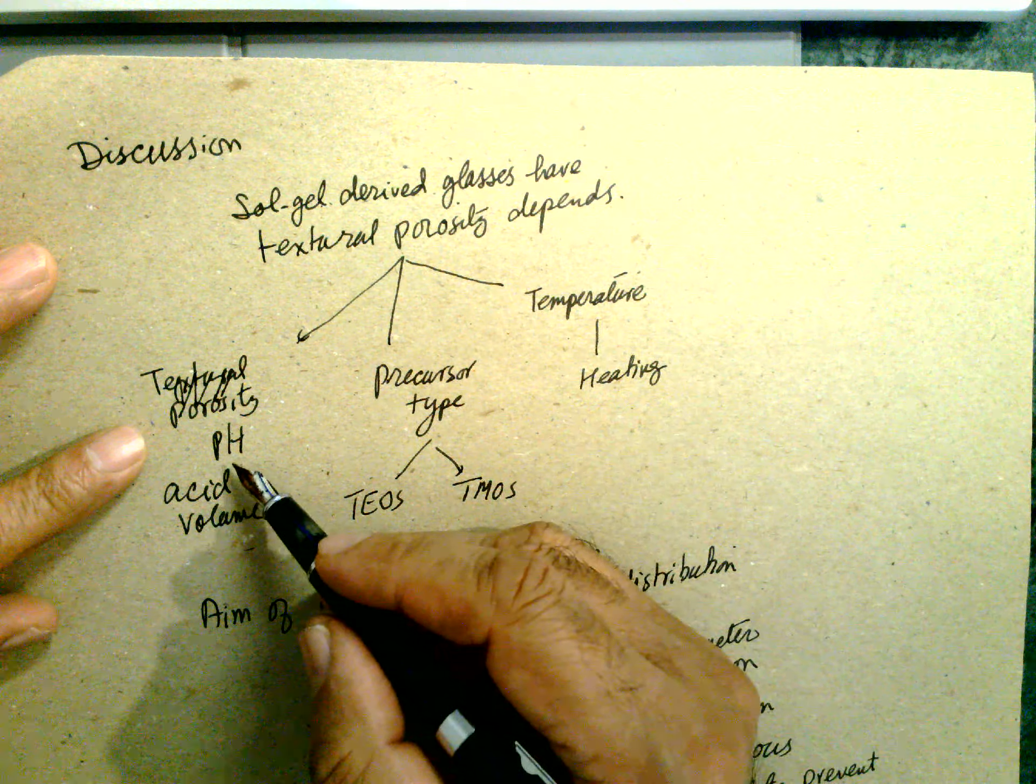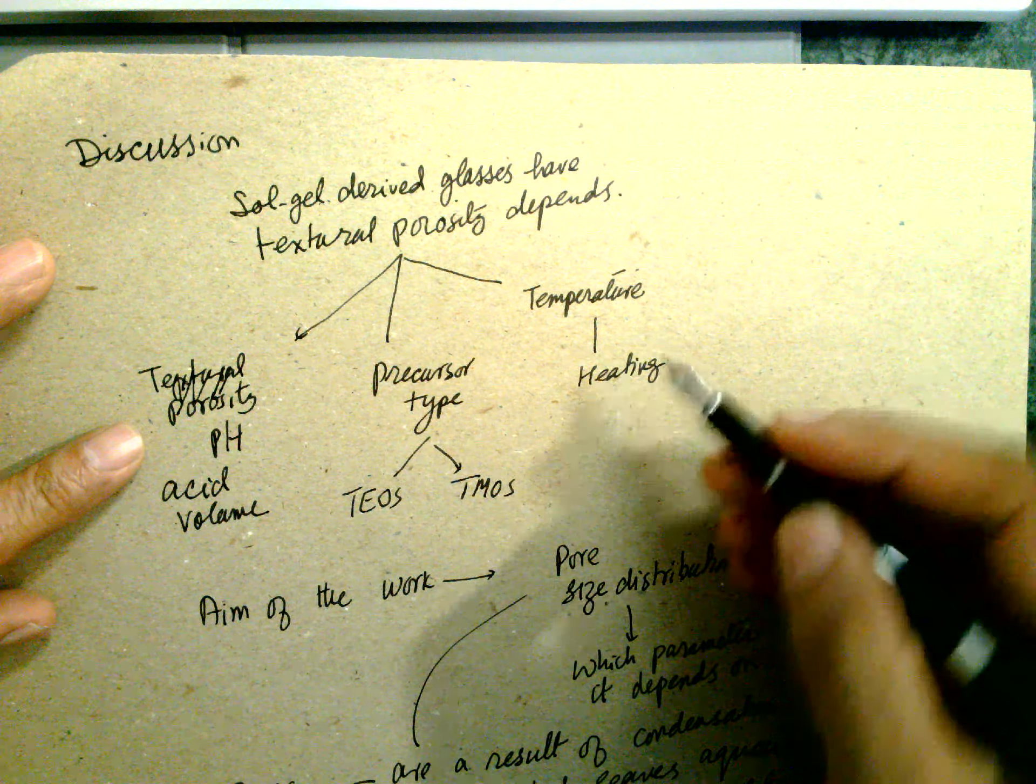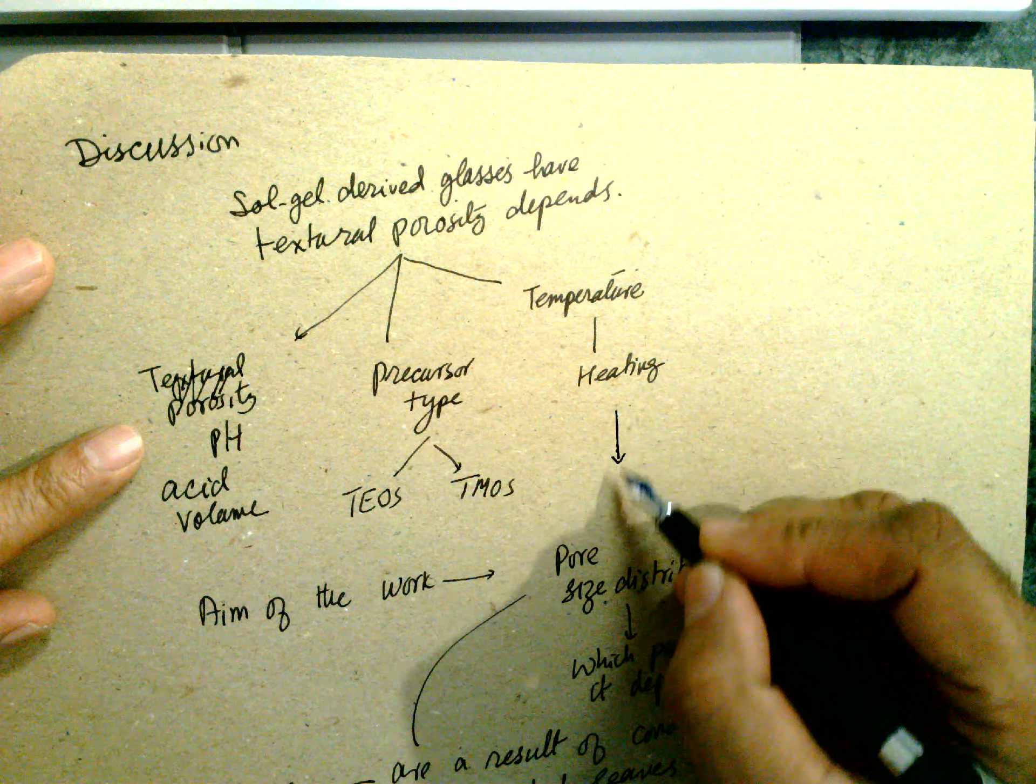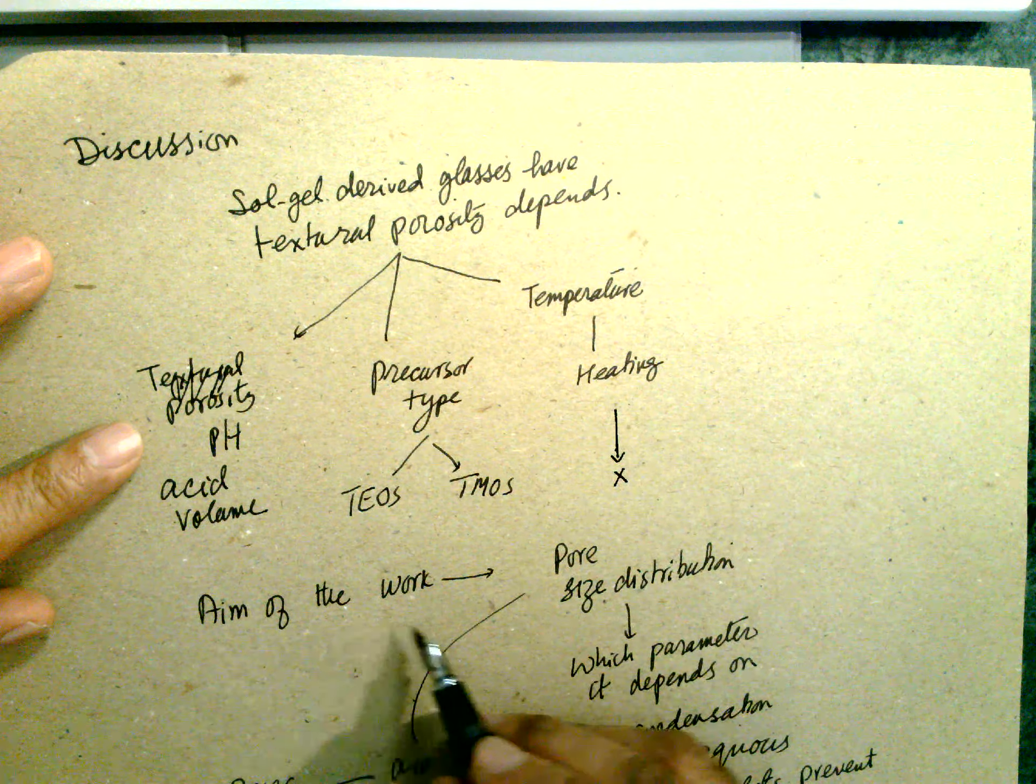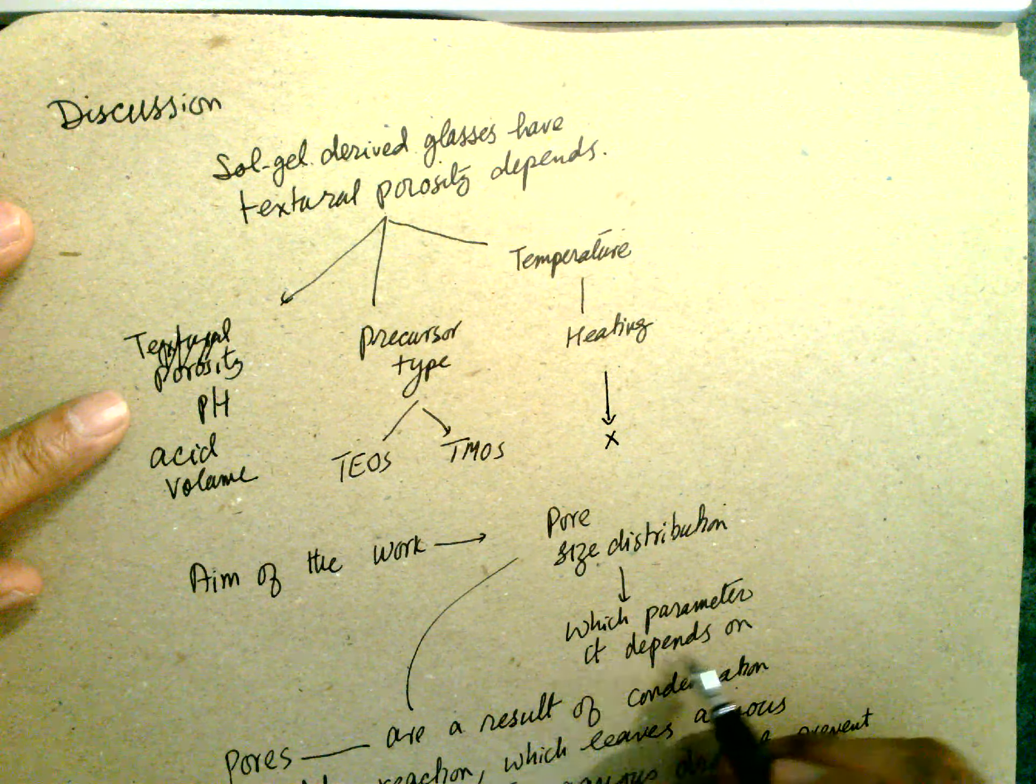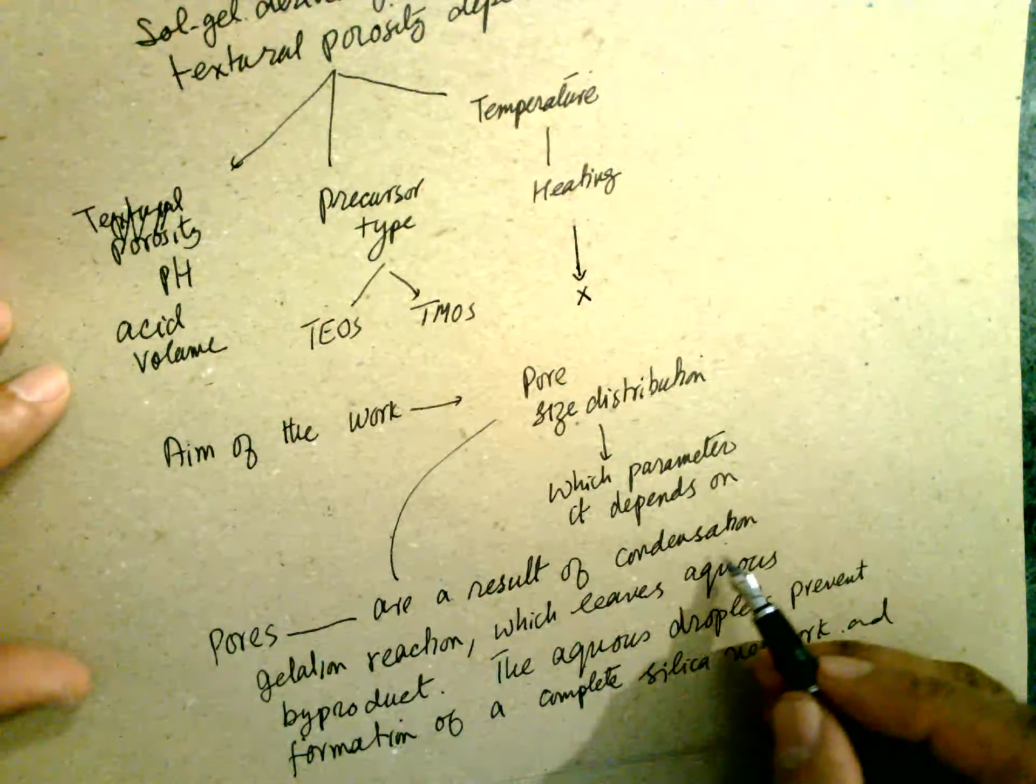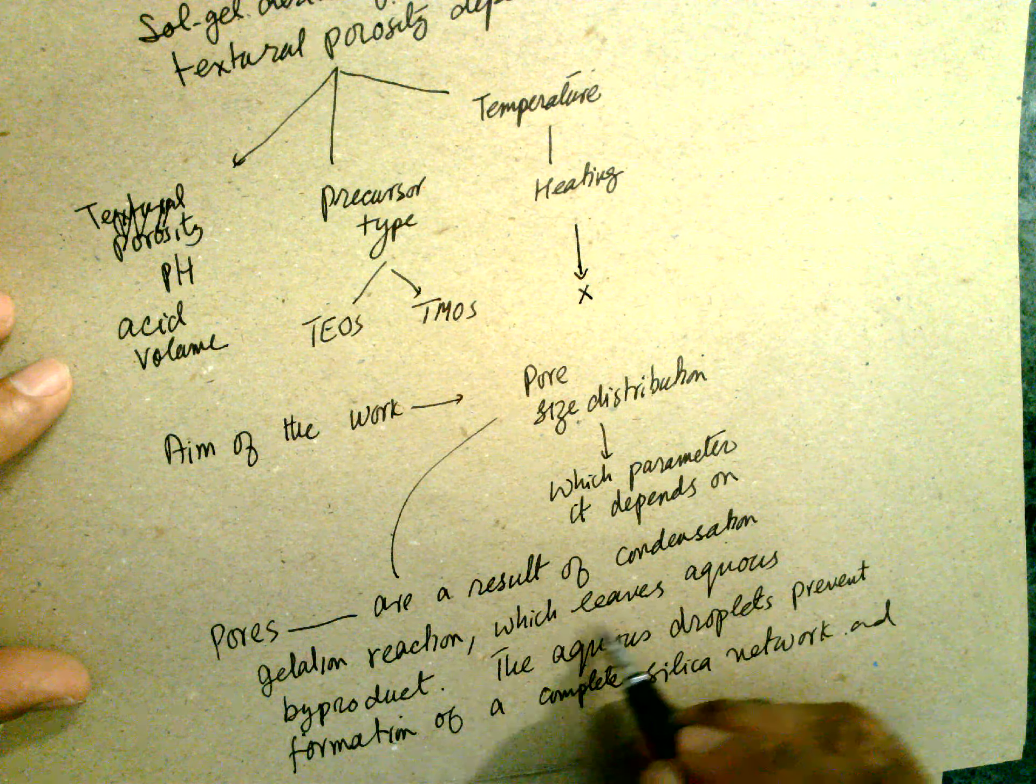Discussion. Sol-gel derived glasses have a texture porosity depending upon the pH of the acid, precursor type, TEOS or TMOS, and heating. Heating has not been investigated. Aim of this work is pore size distribution, which pores, pore diameters depend on.